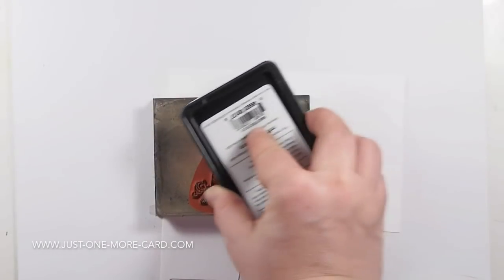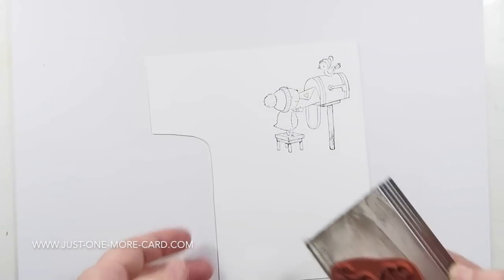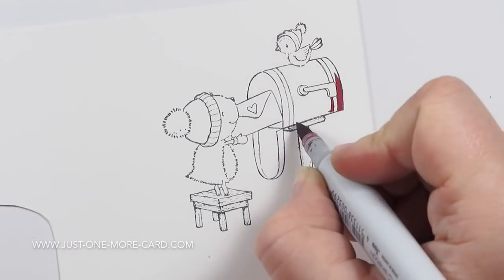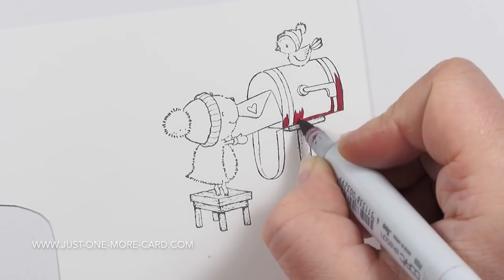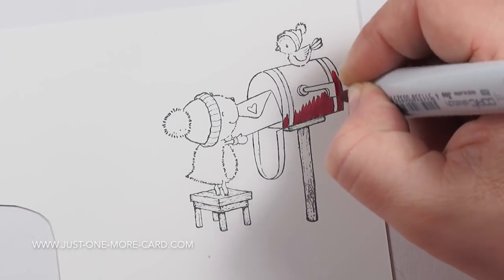For stamping I am using My Favorite Things Licorice Hybrid ink, because that works great with copics, watercolors and pencils. I am just stamping that on some Simon Says Stamp heavy cardstock, because that is very nice to work with when you are using copics, and then I am just starting to color this in.